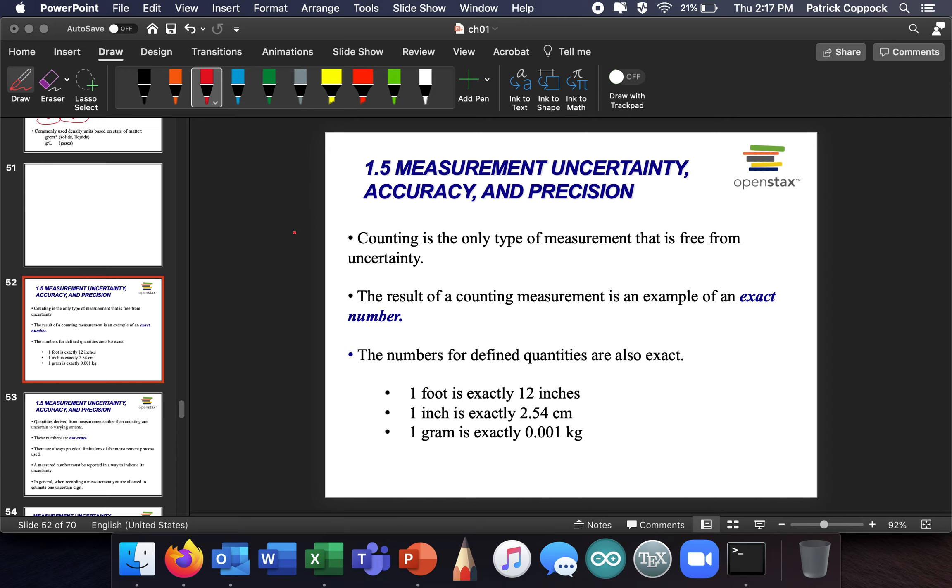Counting is the only kind of measurement that is free from uncertainty. I remember recently when I was 18, 19 years old, which is 30 years ago, but I feel so recent thinking if I'm going to have some number, let's say 4.01368, I'm going to keep all those digits because I'm going to do it exactly, right? But this is not exact. Counting is the only type of measurement that is free from uncertainty. It's the only thing where you can have an exact number.